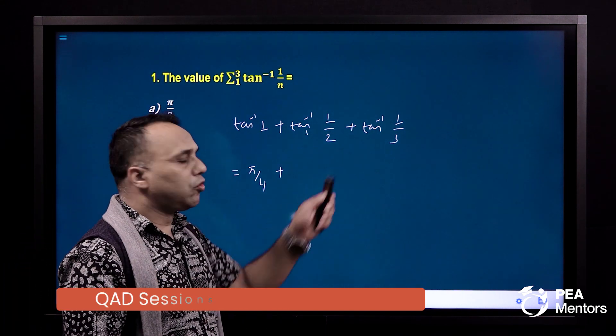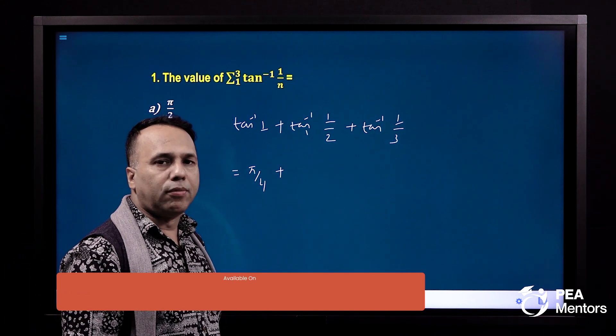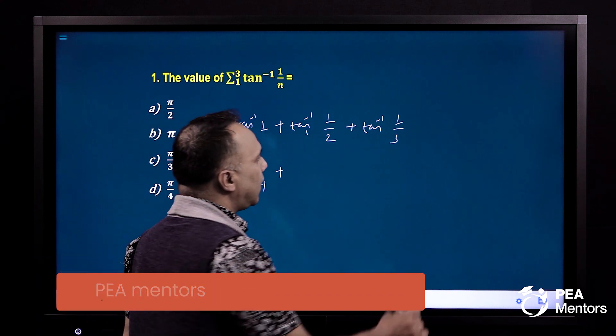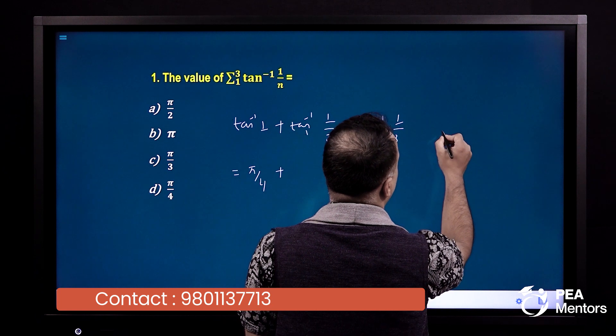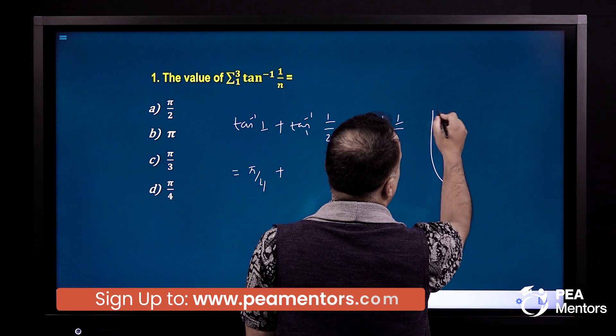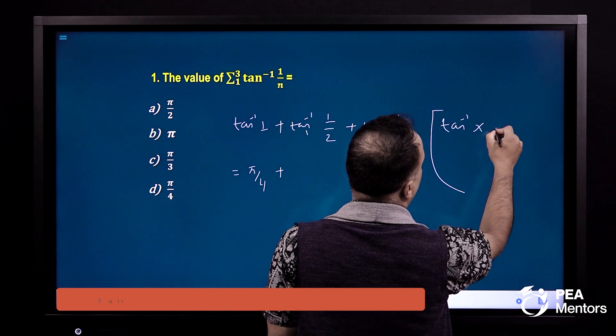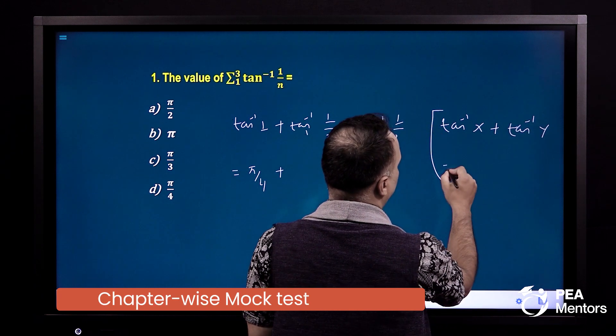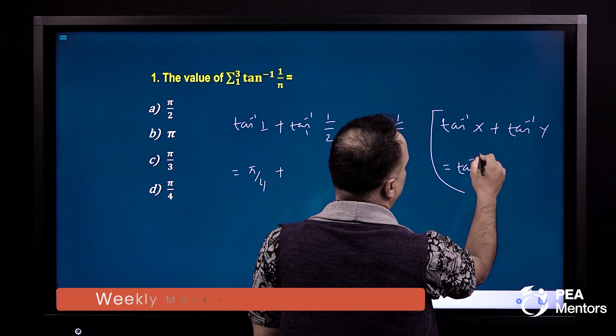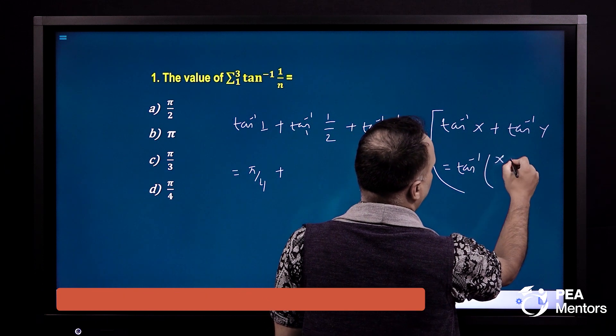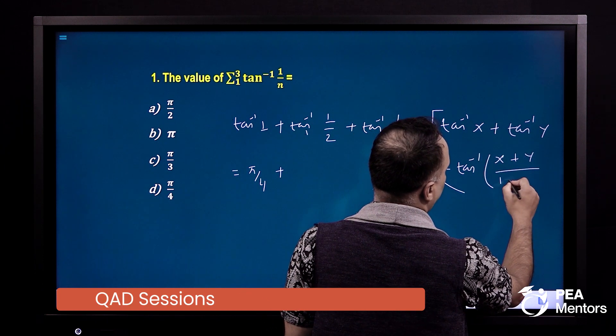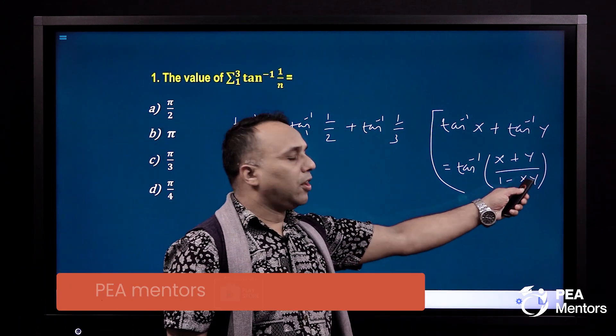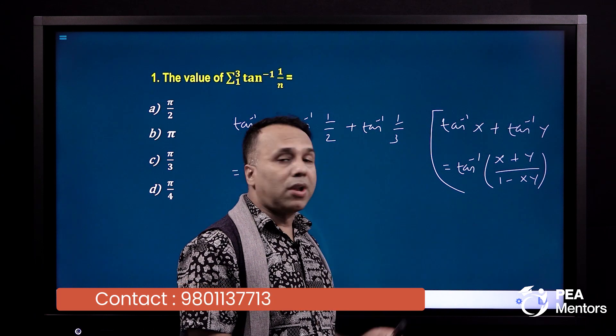tan inverse x plus tan inverse y equals to tan inverse x plus y upon 1 minus xy. Yow ni yamho formula hai na? xy is less than 1. Less than 1 bada yow formula.